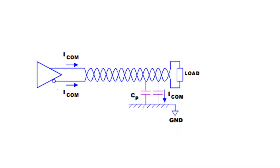In common mode noise, common mode current flows in both wires in the same direction and returns to ground path via parasitic capacitance.